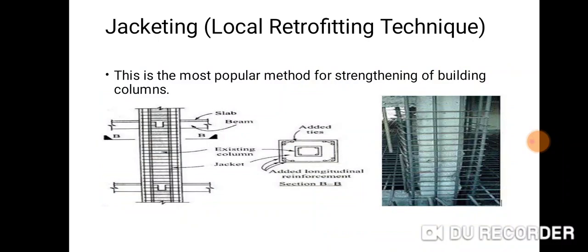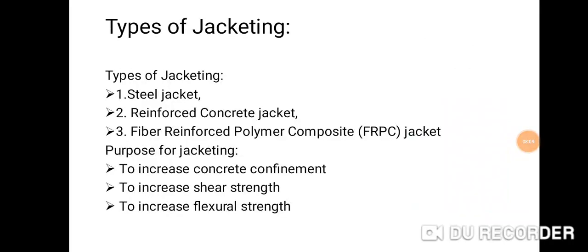Jacketing is the most popular method for strengthening of building columns. Types of jacketing include: Steel Jacket, Reinforced Concrete Jacket, and Fiber Reinforced Polymer Composite Jacket. The purposes for jacketing are: to increase concrete confinement, to increase shear strength, and to increase flexural strength.